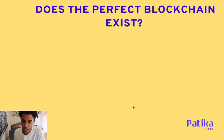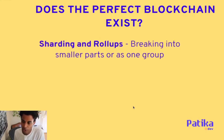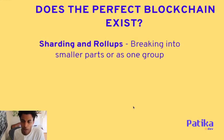So does the perfect blockchain exist? Looking at solutions for Ethereum specifically, one approach is sharding and rollups: breaking transactions into smaller parts or treating them as a group, so the main layer-one blockchain doesn't have to handle every transaction directly. Transactions are reconciled in smaller parts and then rolled up to the main chain, improving scalability without fully sacrificing security.